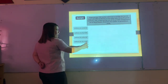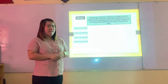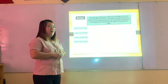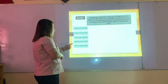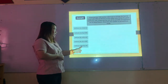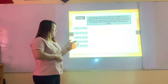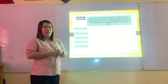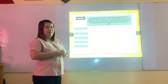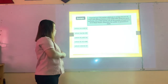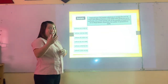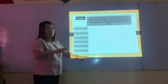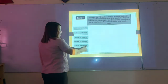Fifth arrangement: sunflower, orchid, baby's breath, rose — sunflower is now followed by orchid. Sixth arrangement: sunflower, orchid, rose, baby's breath — baby's breath and rose switch positions.